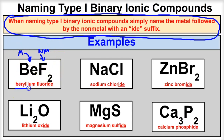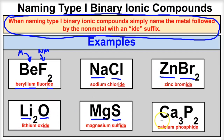For example, the metal here is beryllium, and it's bonded to a fluorine atom. We drop the ending and add an -ide suffix, so this becomes beryllium fluoride. This right here would become sodium chloride. This right here would become zinc bromide. This right here would become lithium oxide. This becomes magnesium sulfide, and this is calcium phosphide. So the first thing you have to do is determine what type of compound it is — type 1, type 2, or type 3 — then follow the naming rules, and you should get it right every single time.